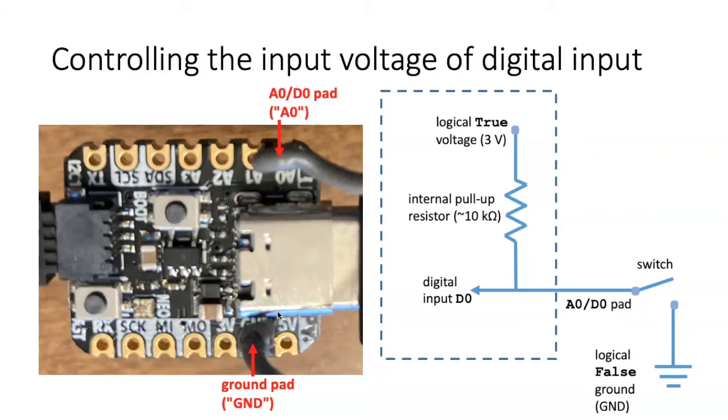The way that we determine the state is through using a switch, and to understand how this works, let's talk a little bit about how pull-up resistors work.